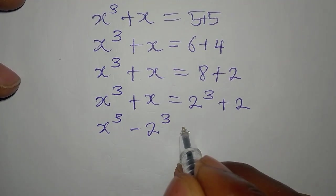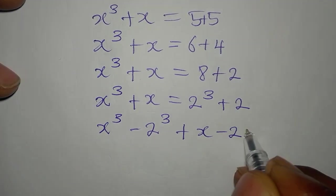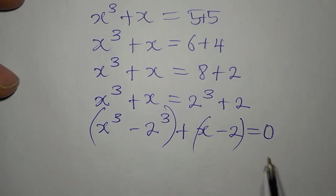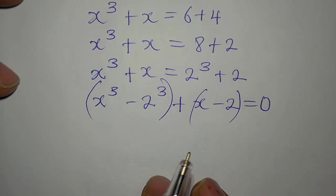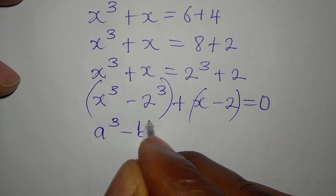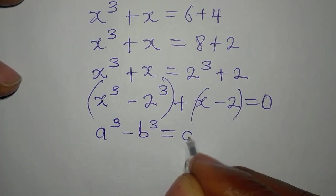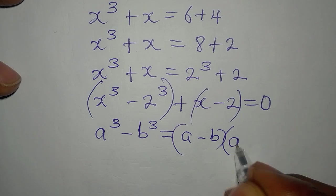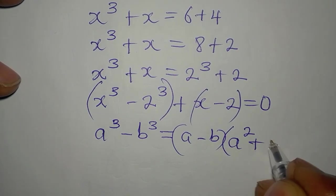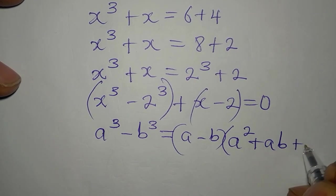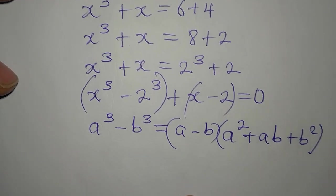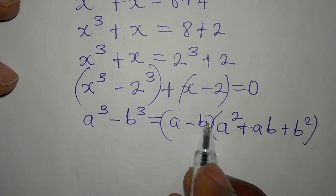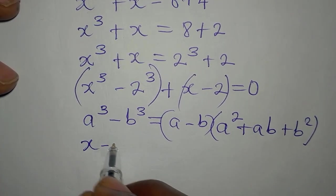When we reposition, we get x³ minus 2³ plus x minus 2 equals 0. We group and simplify using the identity: a cube minus b cube equals a minus b times a squared plus ab plus b squared. So the first group factors as x minus 2.